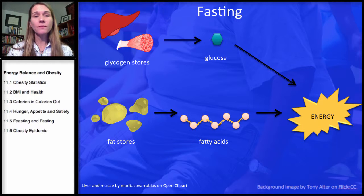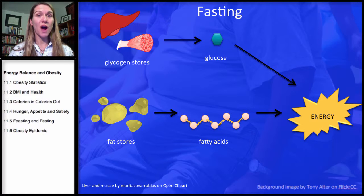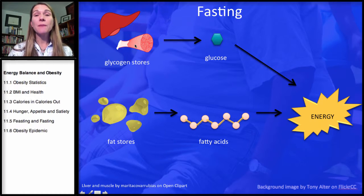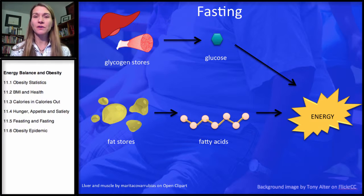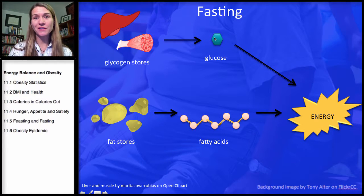We just stored all that energy — now we're going to pull it out. First, remember we took the glucose from our carbohydrate source and stored it in the liver and the muscle. The liver is willing to share its glucose stores with the rest of the body. As blood glucose drops, the pancreas releases glucagon, which stimulates the breakdown of glycogen into glucose, increasing blood glucose so cells can use it for energy. The muscle also has glycogen stores, but the muscle is very selfish — it does not share its glucose, because it constantly needs energy to do work, so it hoards its own glycogen stores and breaks them down for its own use.